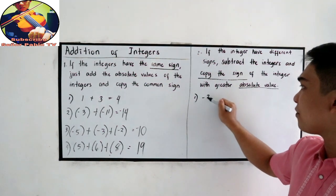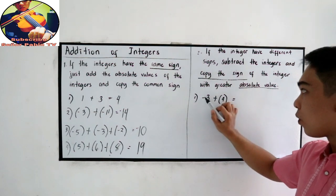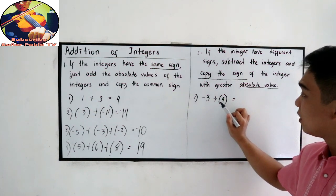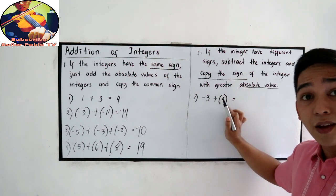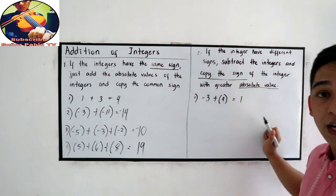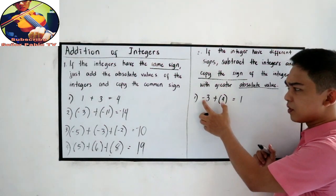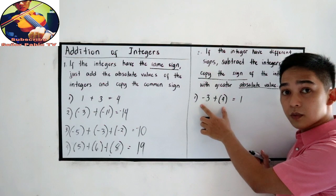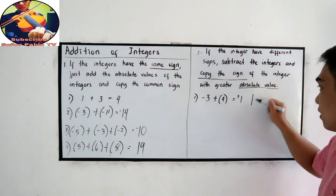Let's say negative three plus positive four. They are negative and positive — different signs. Therefore, subtract the numbers: four minus three is one. Now copy the sign of the greater absolute value. The absolute value of negative three is three. Four is greater than three, and four is positive, so the answer is positive one.